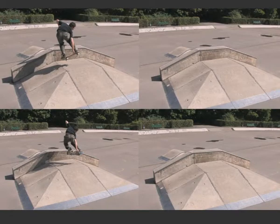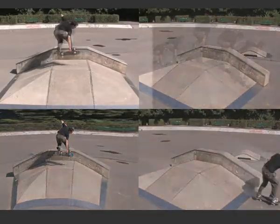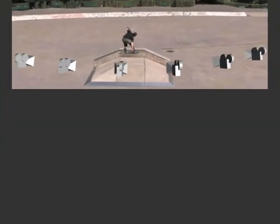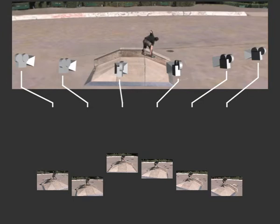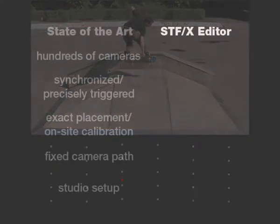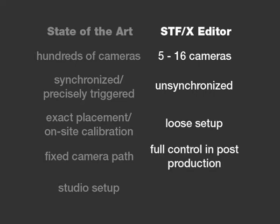With our approach, various visual effects can be created from the same footage. We capture the scene with just a handful of unsynchronized consumer-grade cameras. To create visual effects, we synthesize the needed samples from the recordings by making use of spatiotemporal image interpolation. We thus loosen the strict requirements on dense camera setups, shutter timings, and exact camera placement for visual effects creation. Camera paths can be further edited after the image acquisition, and our flexible setup allows on-site recordings to be possible.